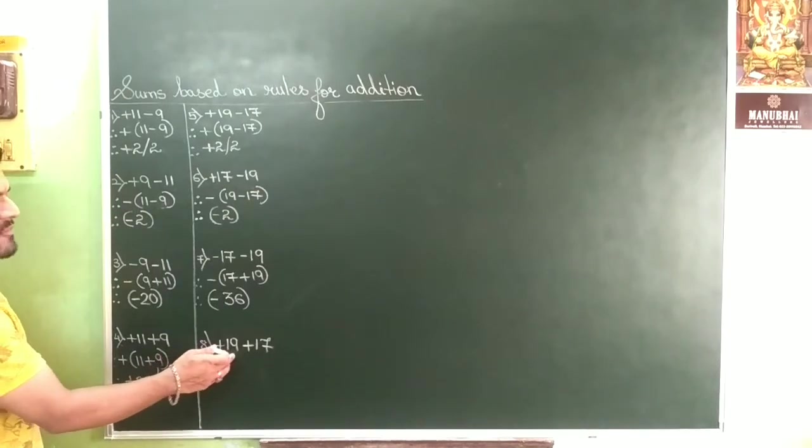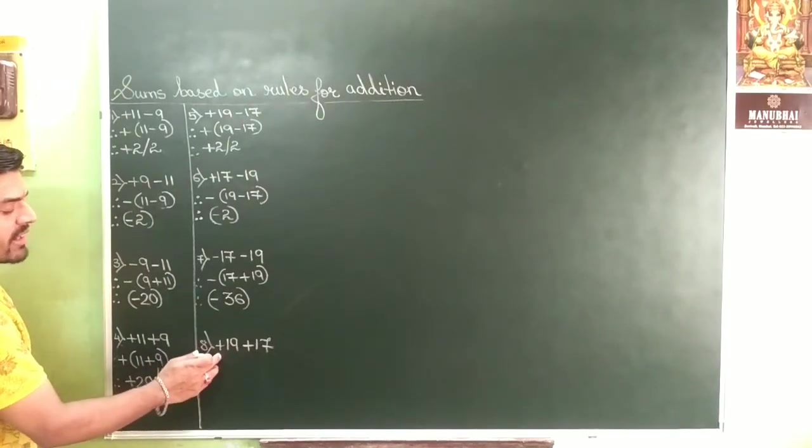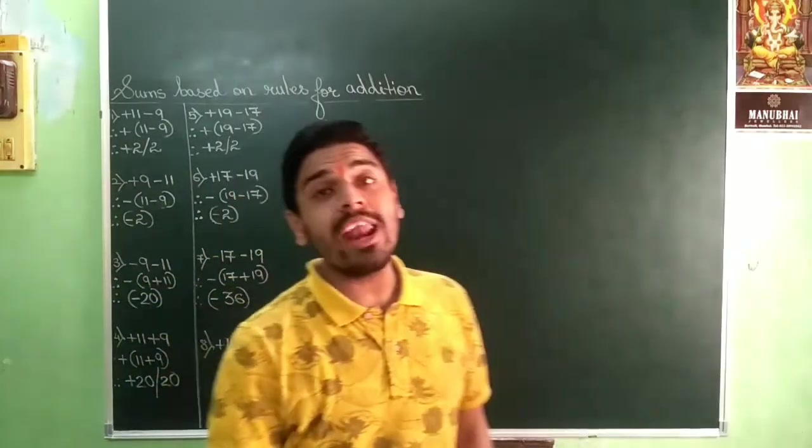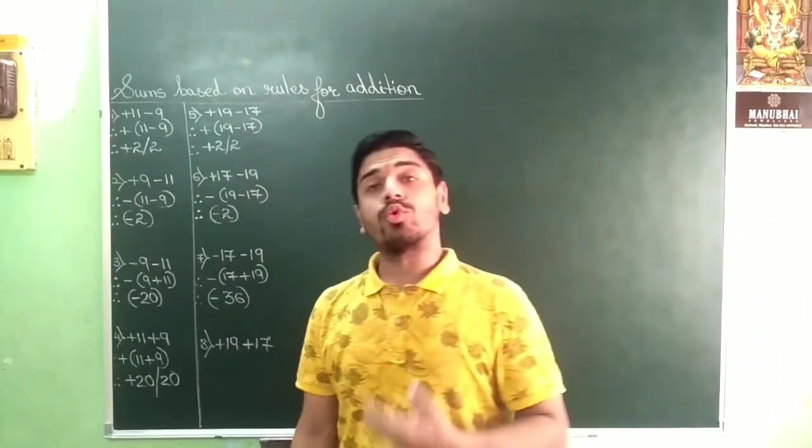Next. Negative 19, sorry, positive 19, positive 17. Both numbers are positive. So I will tell you the rule.